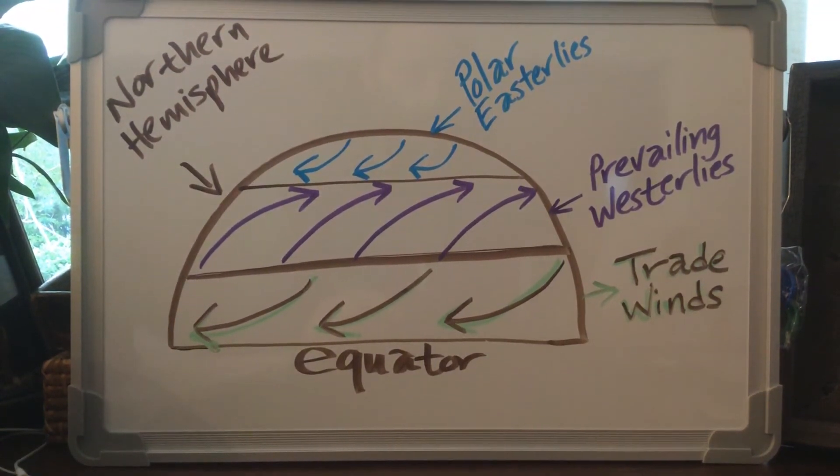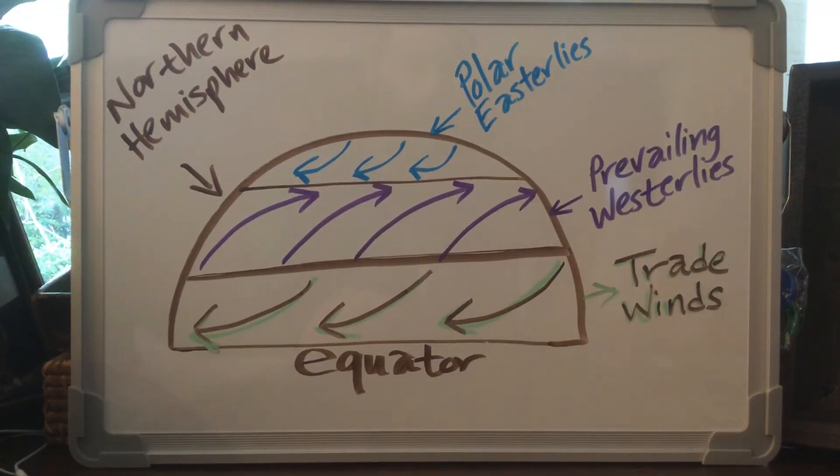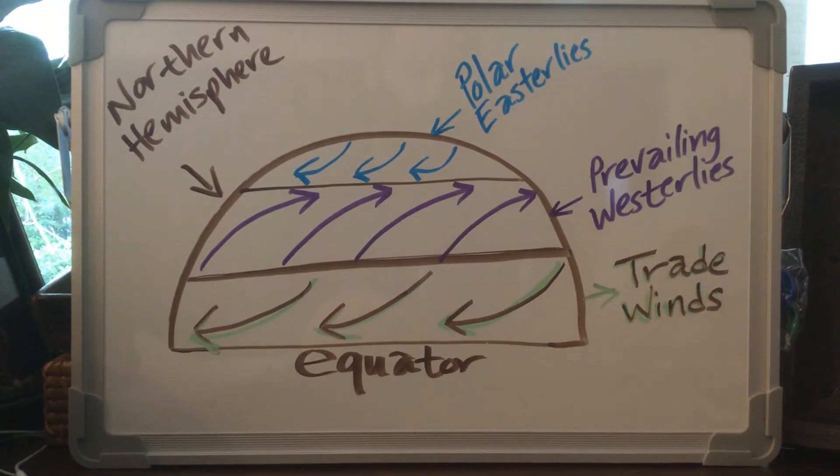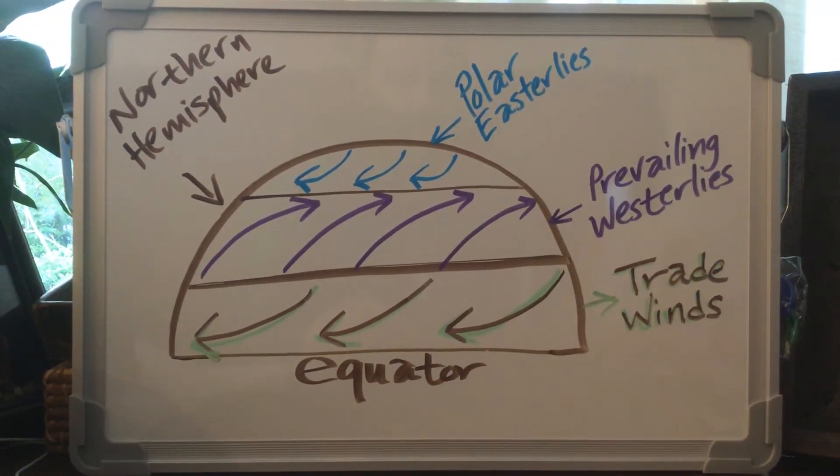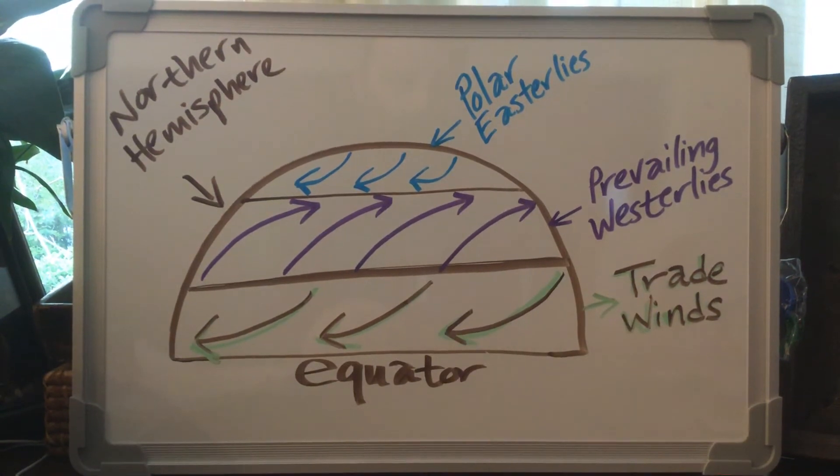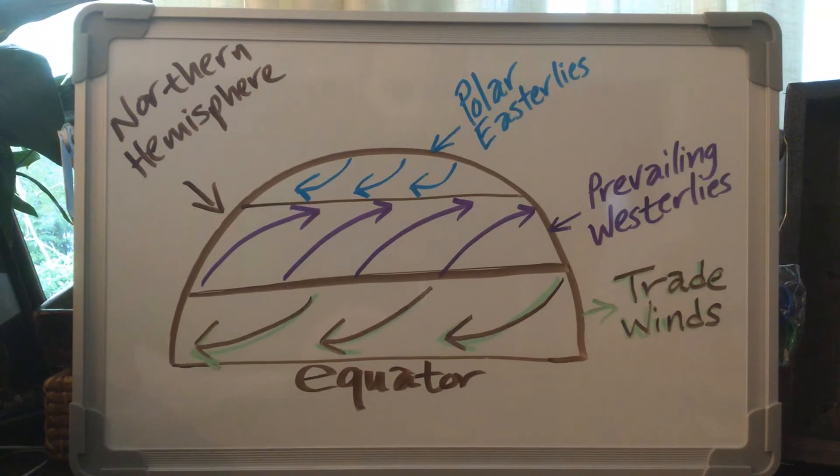But the prevailing westerlies also blow as well. And for us they blow from the west or the southwest, and that's basically how our land and sea breeze blow as well. So it's kind of tough to tell when the prevailing westerlies are blowing, but they definitely do.